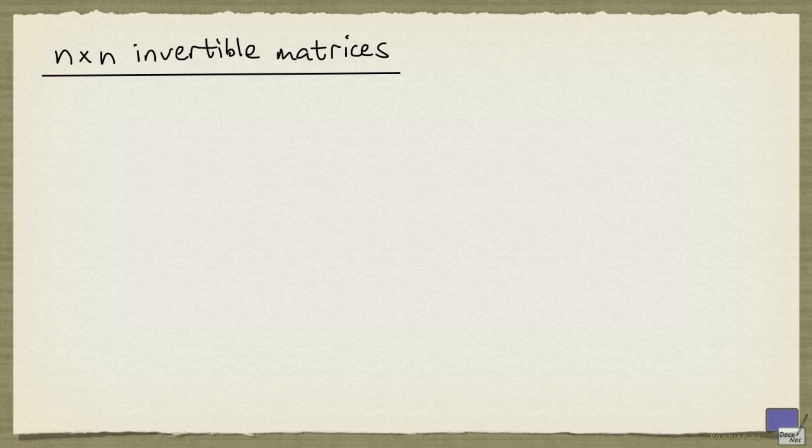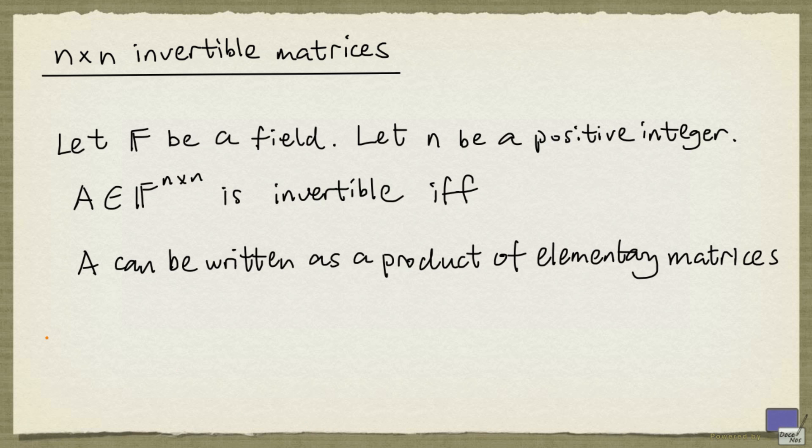We now look at a way to generate invertible matrices using the following result. Let F denote a field, let n be a positive integer, then an n by n matrix A with entries in F is invertible if and only if A can be written as a product of elementary matrices.